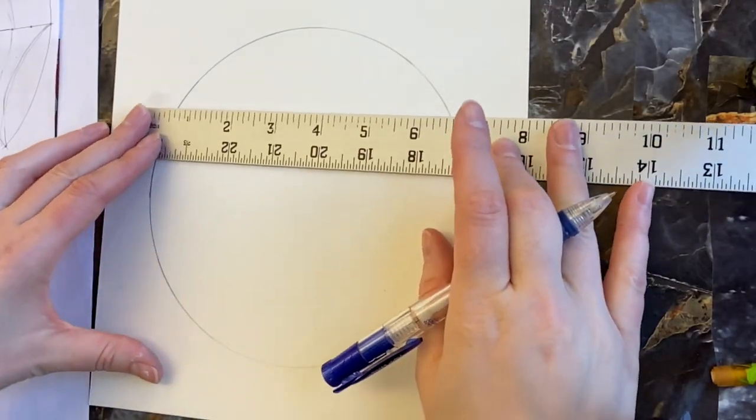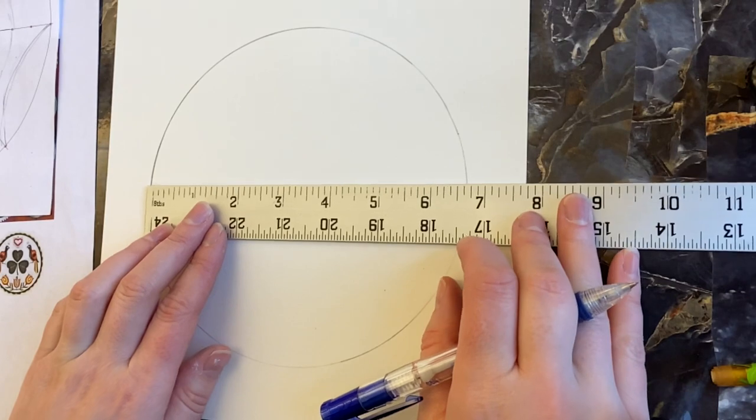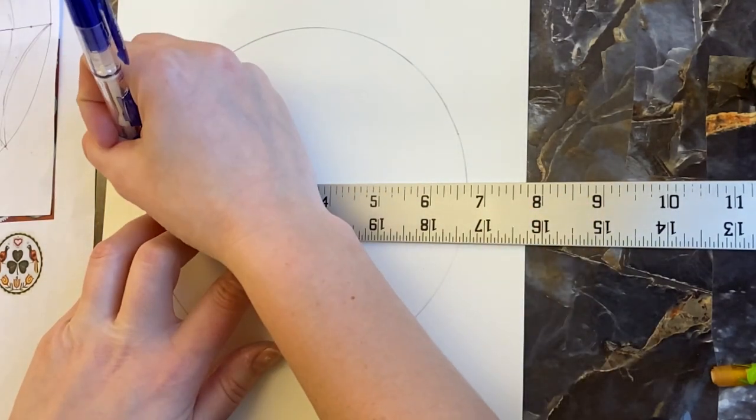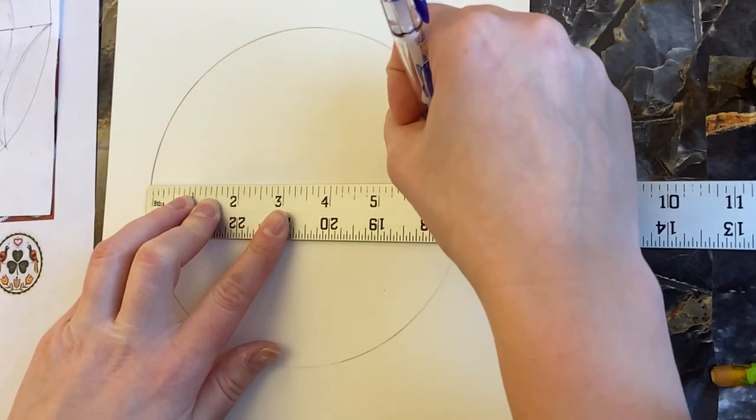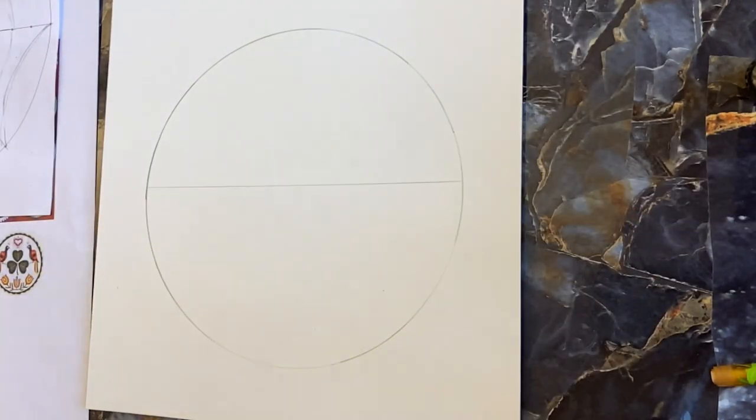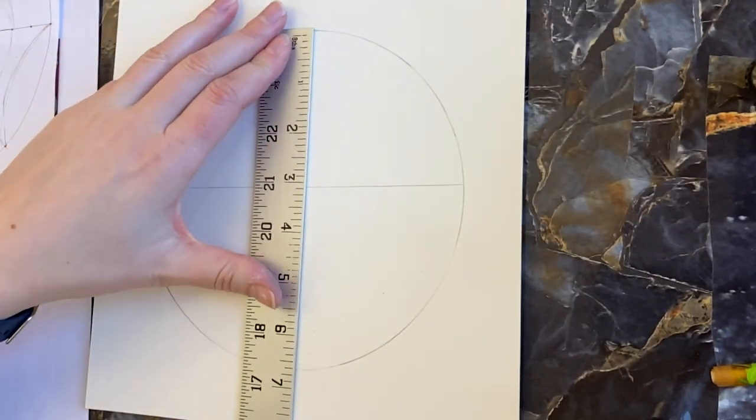First I'm going to draw a line that splits my circle perfectly in half. Draw lightly because this is a guideline and will be erased. There we go. Now I'm going to split it in half again the opposite direction.